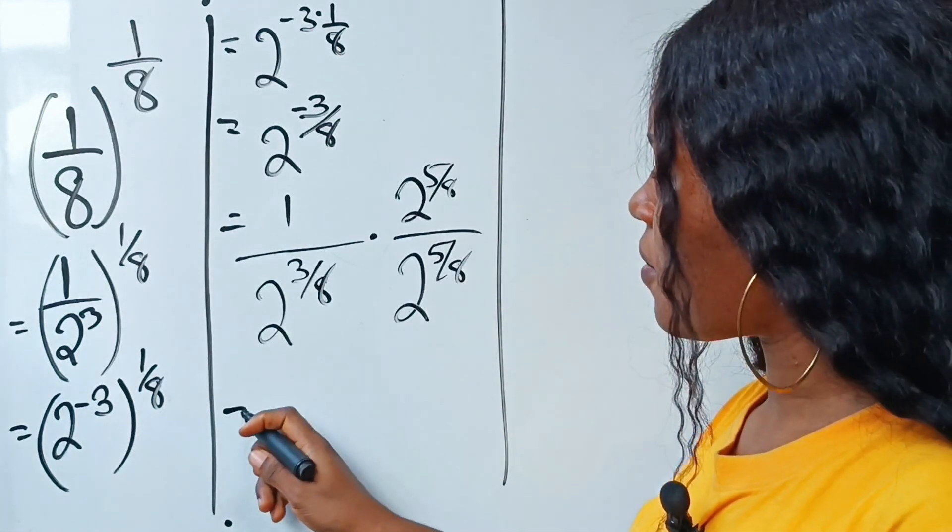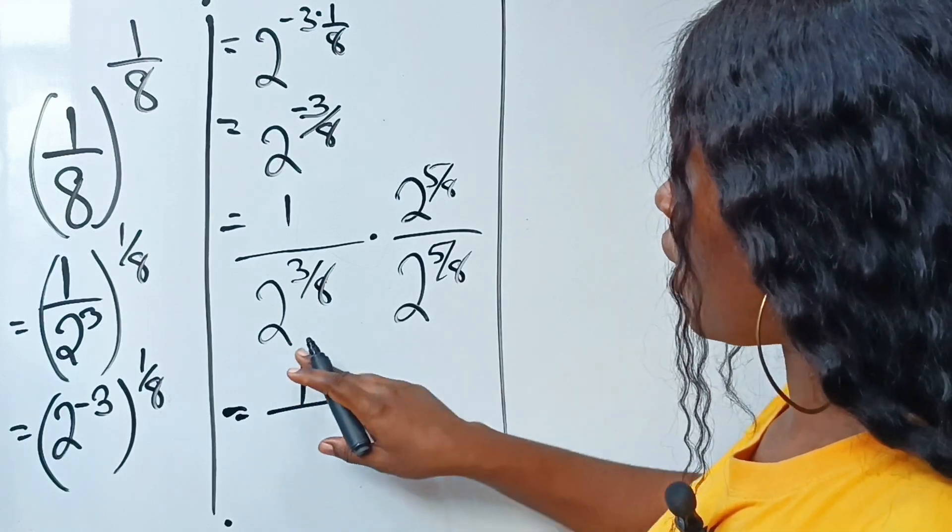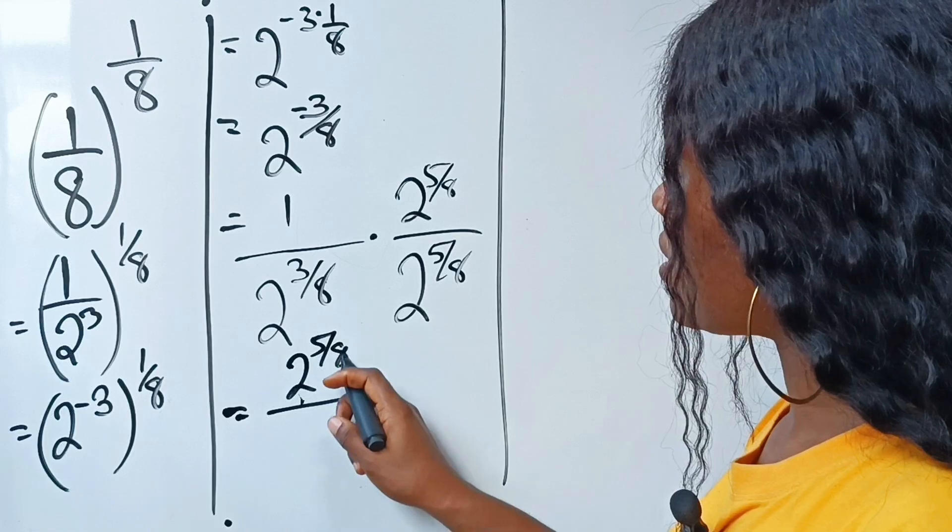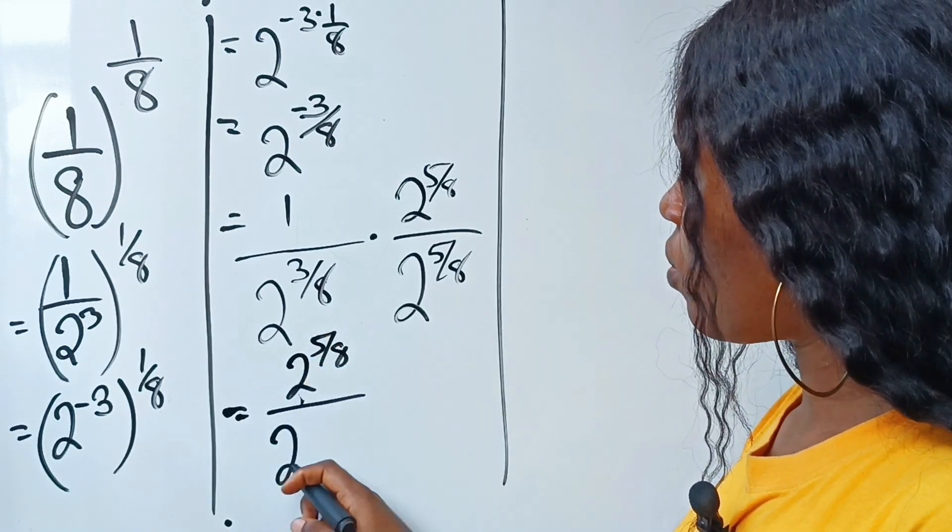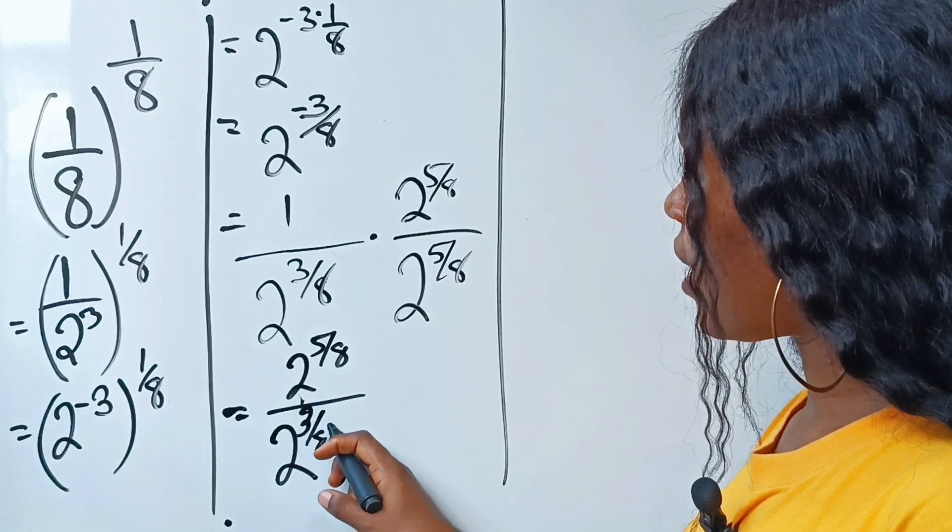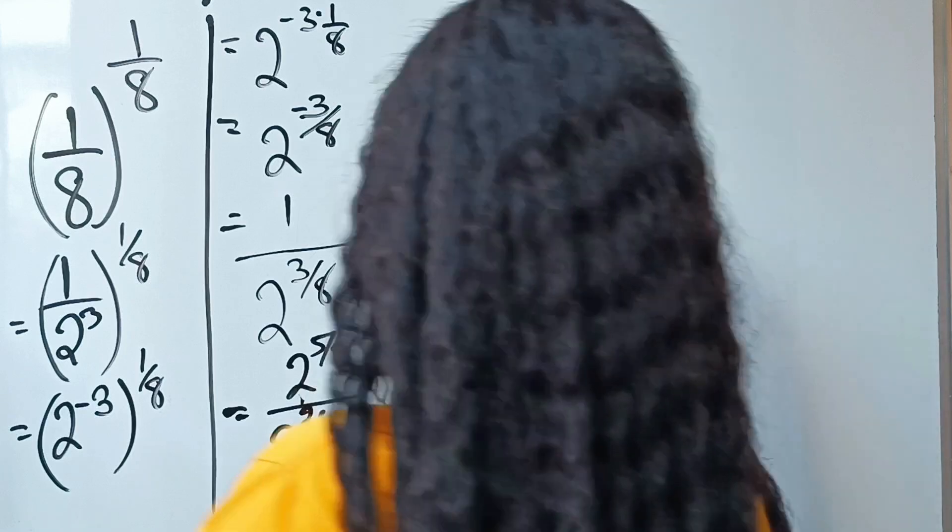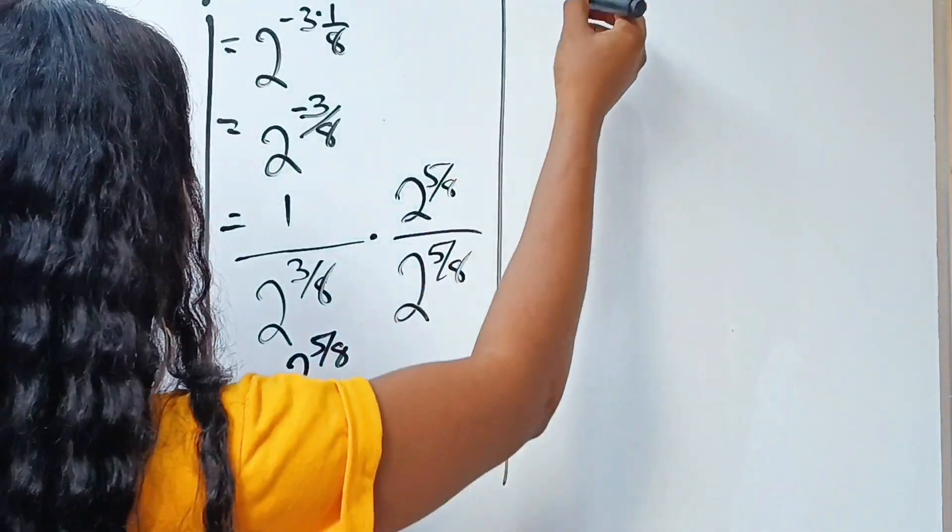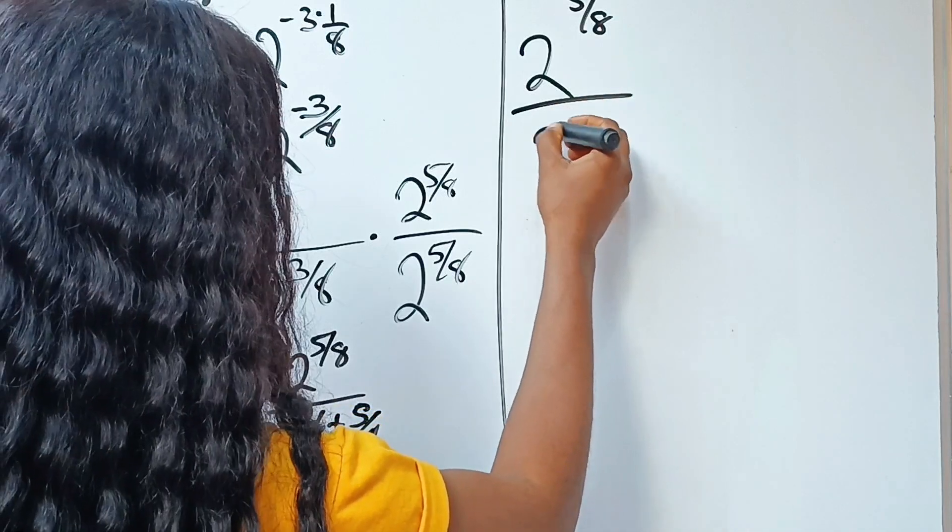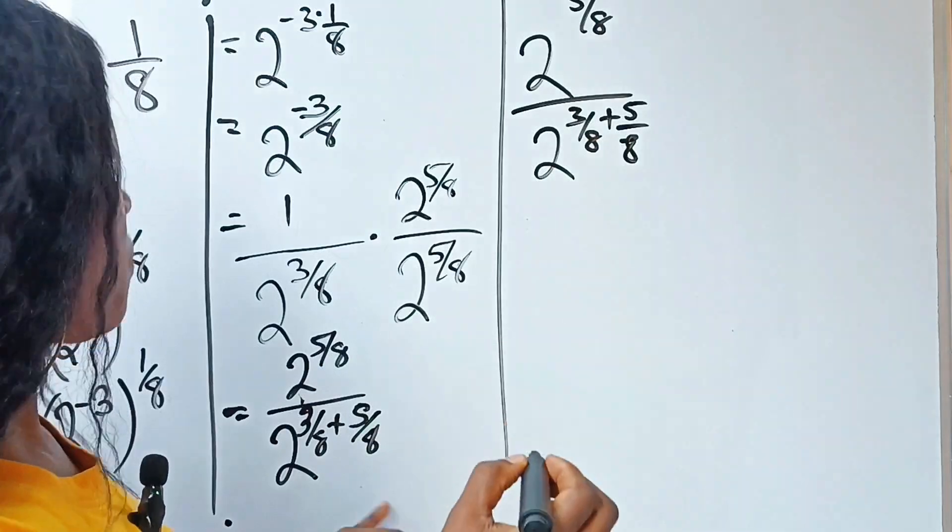Now, we can rewrite this as 1 over... this multiplied by this will give us 2 to the power of 5 over 8. And this multiplied by this, we are going to pick one base and add the powers: 3 over 8 plus 5 over 8. So this is 2 to the power of 5 over 8 divided by 2 to the power of 3 over 8 plus 5 over 8.